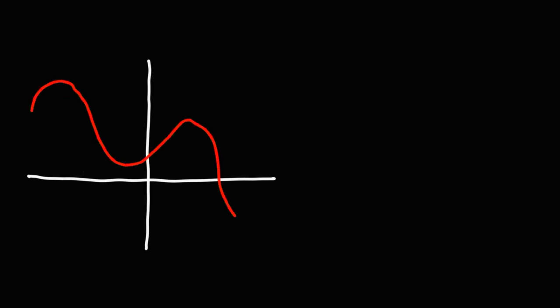First, let's start with a graph. Let's say we have a graph that looks something like that. A tangent line is going to touch the curve or the graph at one point. This would be a tangent line.